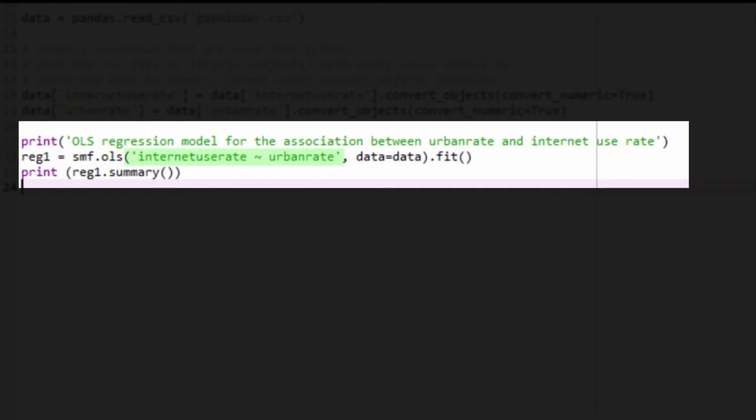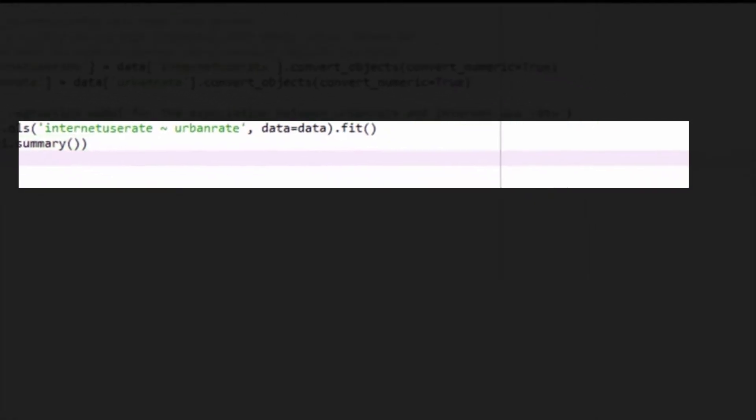Note again that the entire formula is in quotes. I add a comma after the formula in quotes, then the name of the dataframe I'm working with, which is called data. Finally, I ask Python to print the results for my model reg1. Let's run this program and look at the output in the IPython console.